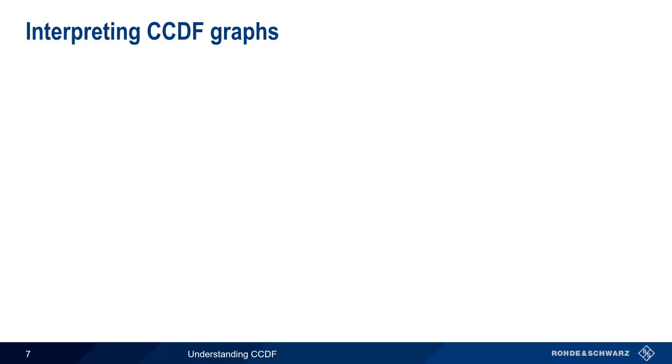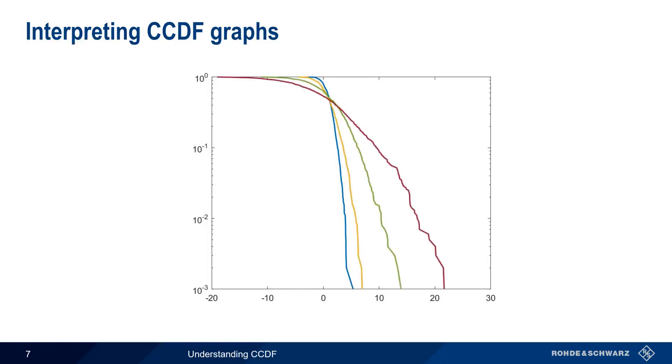The more the CCDF curve moves to the right, the more frequently our signal takes on values that are significantly above the average value. For example, a signal whose amplitude is more or less constant over time will appear as an almost vertical line on our CCDF graph. But as the signal begins to have greater amplitude variation, the trace moves more and more towards the right. As the CCDF curve moves to the right, the ratio of our peak power to our average power, or the so-called peak to average power ratio, increases.